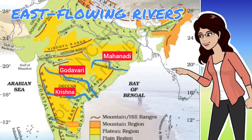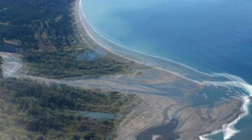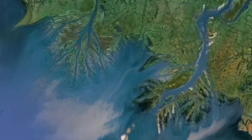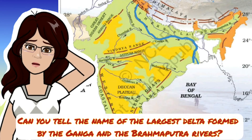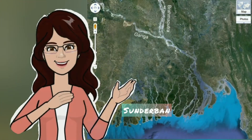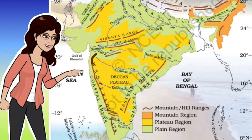We also have east-flowing rivers such as Mahanadi, Godavari, Krishna, and Kaveri. They drain into the Bay of Bengal. These rivers have formed fertile deltas at their mouths. Can you tell me the name of the largest delta formed by the Ganga and the Brahmaputra rivers? Yes, you are right — it is the Sundarban Delta.